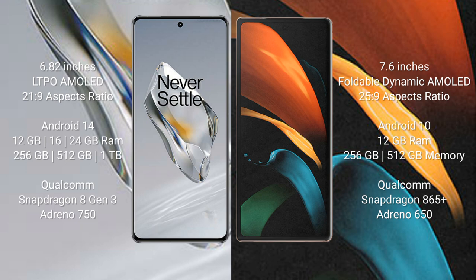OnePlus 12 comes with 12GB, 16GB, or 24GB RAM and 256GB or 512GB internal storage, powered by a Qualcomm Snapdragon 8 Gen 3 processor and Adreno 750 GPU.